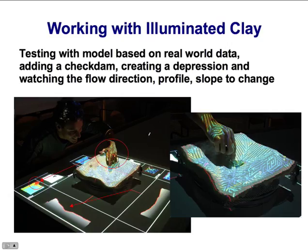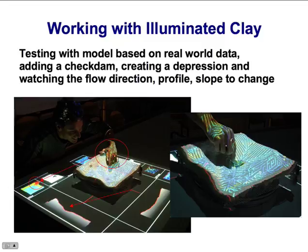Here is another example of interaction with this system where the user is modifying the model. While modifying the model, the profile is recomputed, the elevation and changing elevation is computed, also shading and the water flow direction, which is projected onto the surface. You can see how dynamically it works — while the hand is over the model, the scanner scans the hand, adds it to the digital elevation model, and computes the flow direction on the hand.